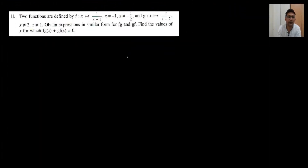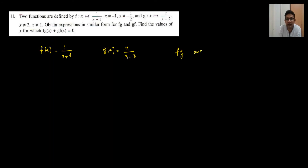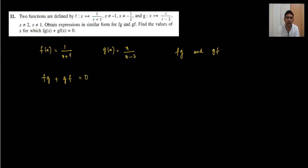Question number 11: f of x equals 1 upon x plus 1 and g of x equals x upon x minus 2. The question asks to obtain an expression for fg and gf. There is no problem finding both expressions. Then you set f(g) plus g(f) equal to 0 and solve — you can simplify and equate to get the answer.